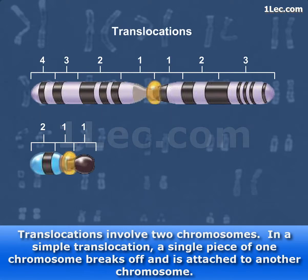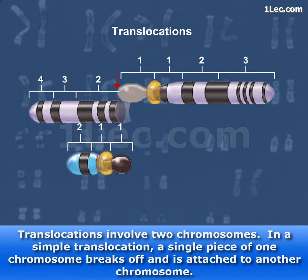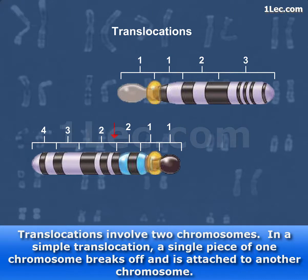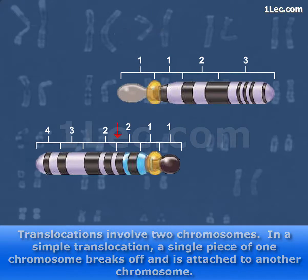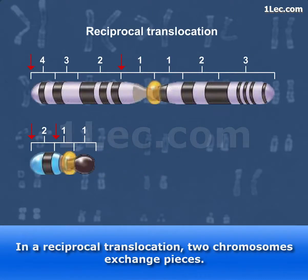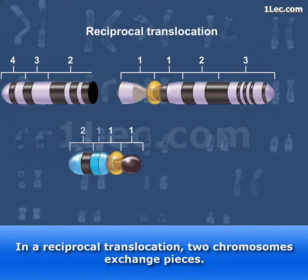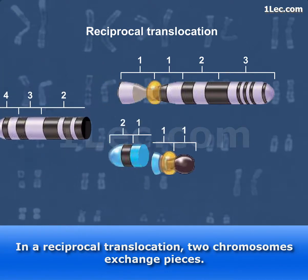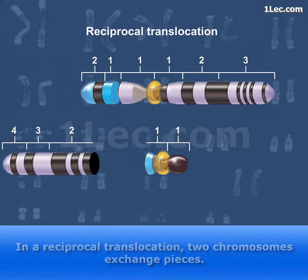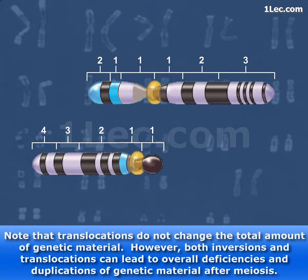Translocations involve two chromosomes. In a simple translocation, a single piece of one chromosome breaks off and is attached to another chromosome. In a reciprocal translocation, two chromosomes exchange pieces. Note that translocations do not change the total amount of genetic material.